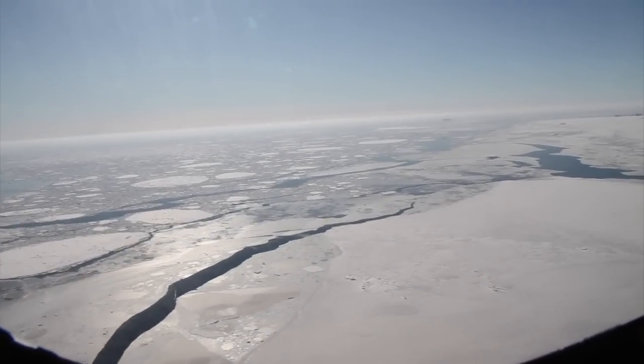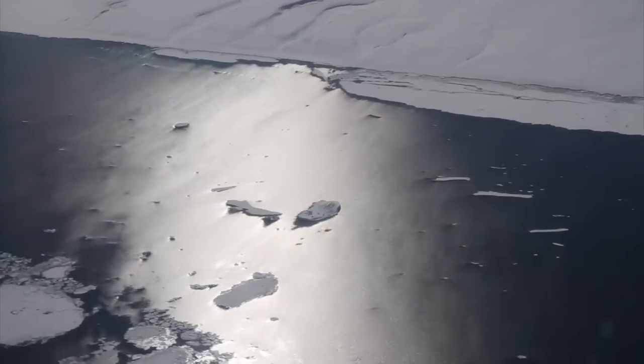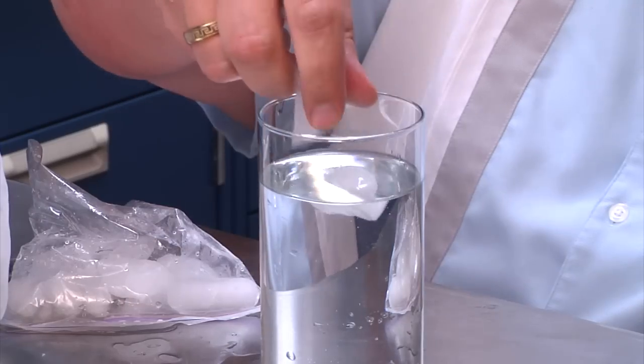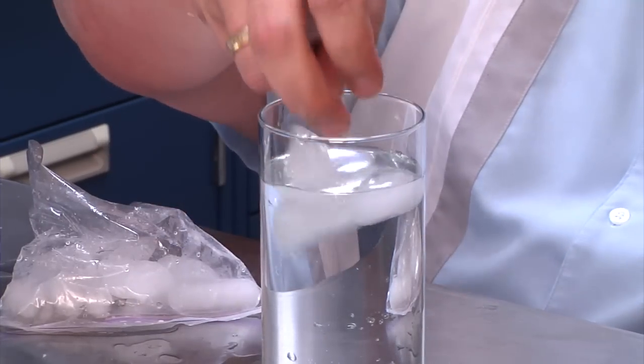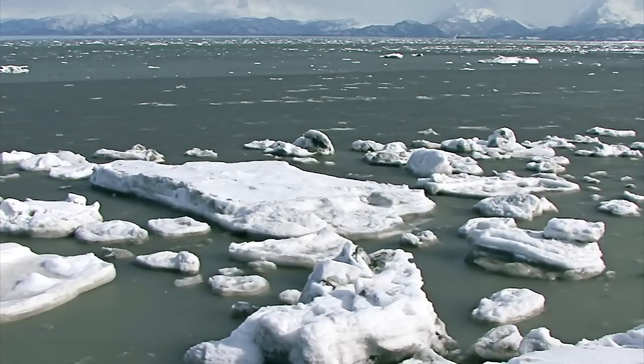And instead of making an ice cube like you see in your freezer or in your glass of water, it makes what we call sea ice. Just like an ice cube floats in a glass of water, sea ice floats on top of the ocean.